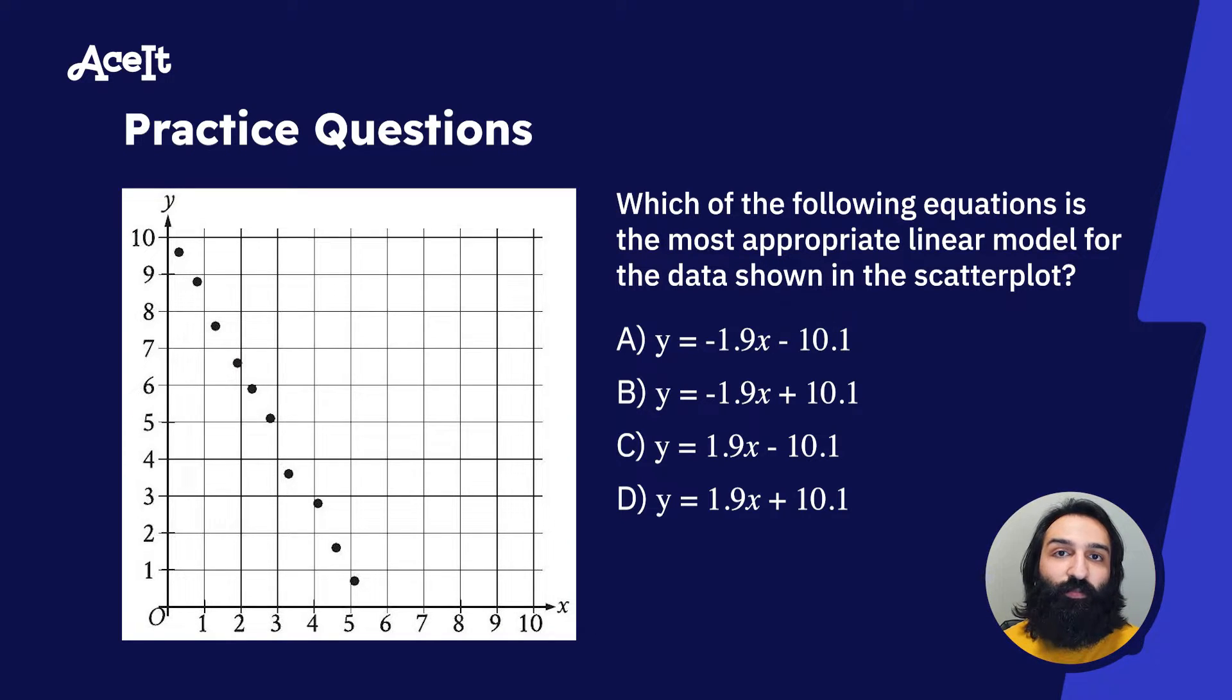We can see that the points are moving downward from left to right. That means our slope is negative. From that, we can automatically eliminate any answer choices that don't have a negative slope. Which one of these answer choices don't have a negative slope? That would be C and D. We can go ahead and eliminate those now.